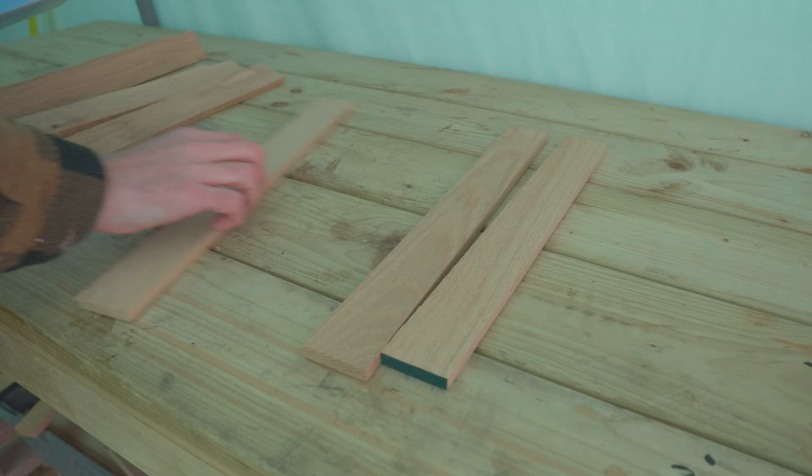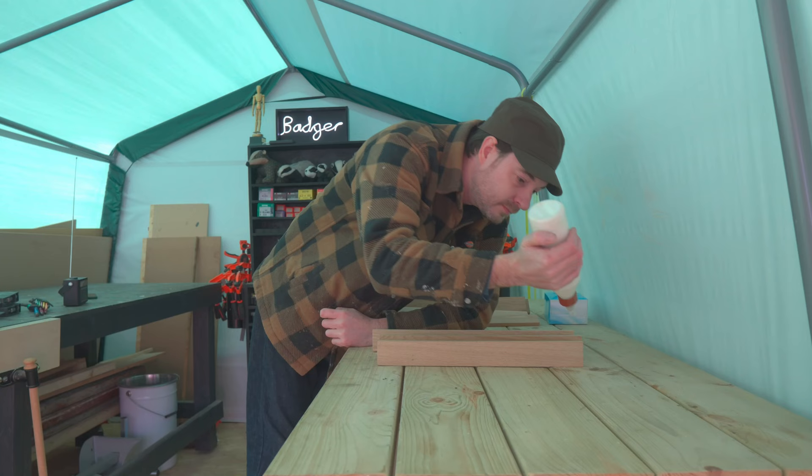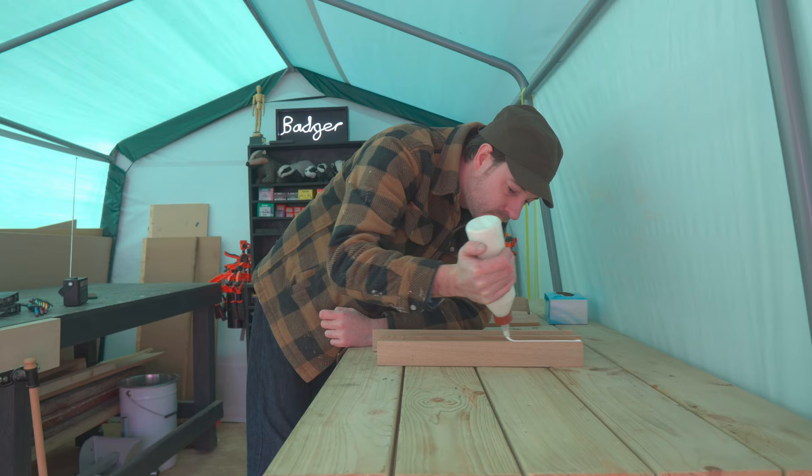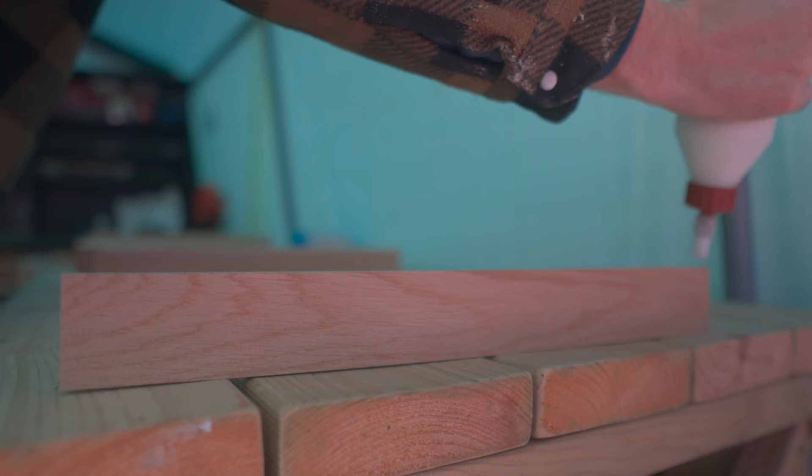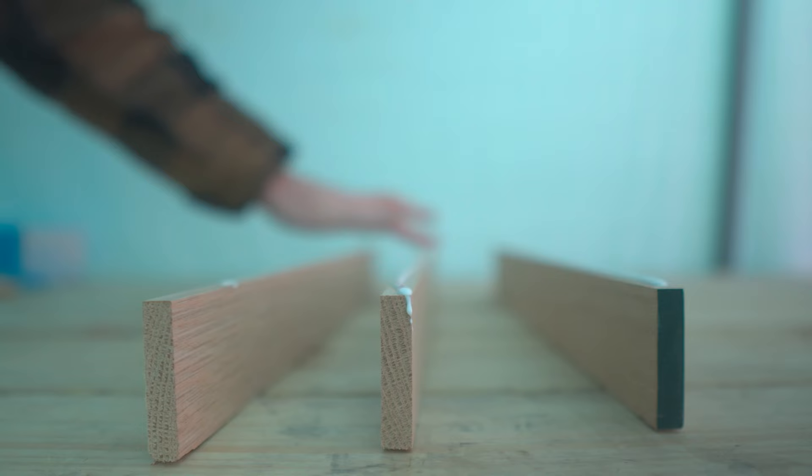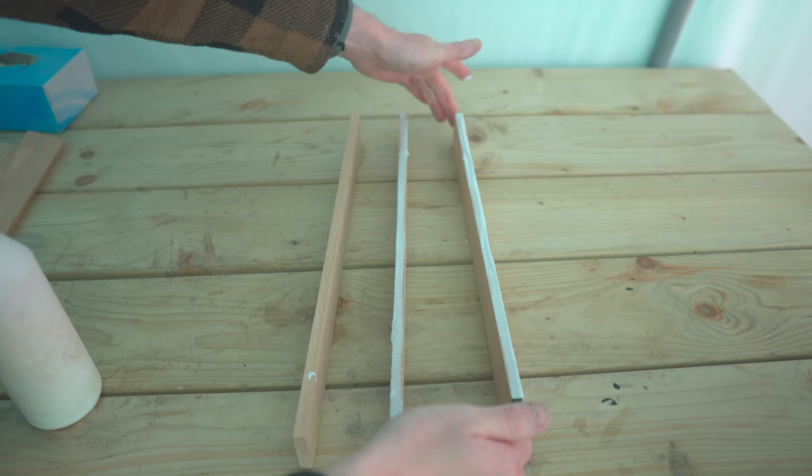So I've got some offcuts of oak. Now I'm going to give you a top tip. Go onto eBay, search hardwood offcuts, and you can get some bargains. That's what I did. I've got these little strips, but I'm going to need to glue them up into panels first.